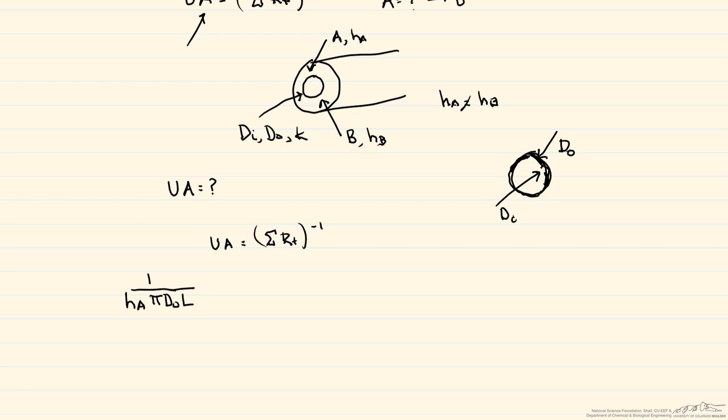Now we need our conductive heat transfer resistance that occurs in the wall. And so that's equal to the natural log of the ratio of the two diameters divided by 2πk, thermal conductivity of the wall, times the length. And this L that we're talking about is the length of this pipe.